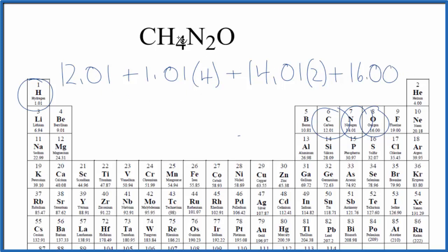When we do the math, we find that the molar mass for CH4N2O is 60.07 grams per mole. That means if we have one mole of urea, it's going to weigh 60.07 grams.